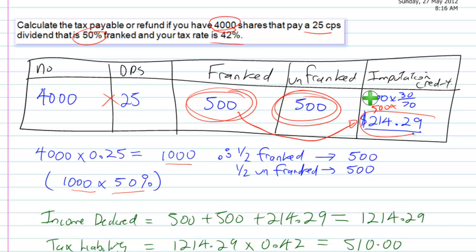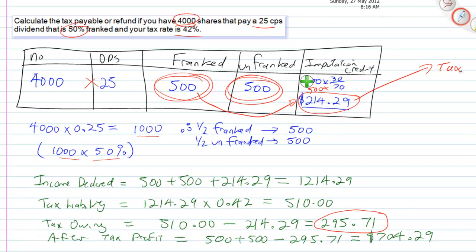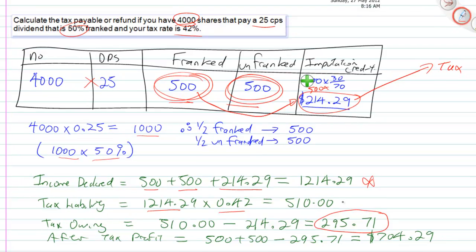So the rest of the thing's kind of working out the way it normally does for us. So our income declared, once again, is whatever's in this box, and this box. So 500 and 500 and 214.29, so that's our income declared. So our tax liability is going to be that, times by our tax rate, which is 42%, which is $510.